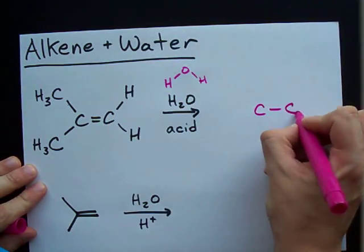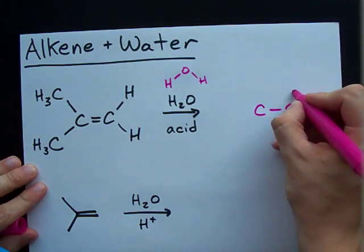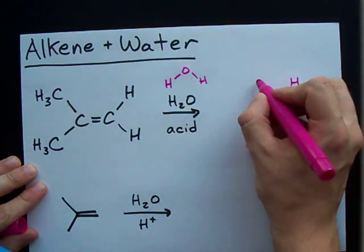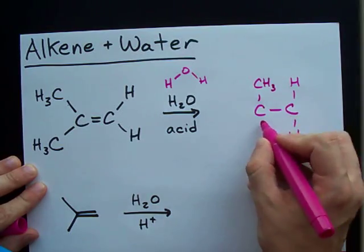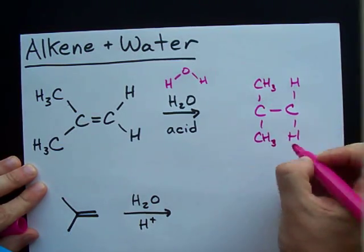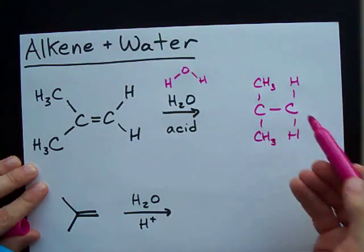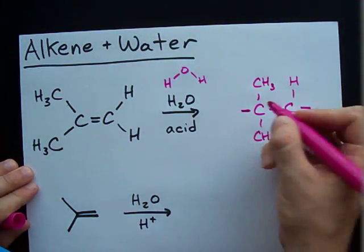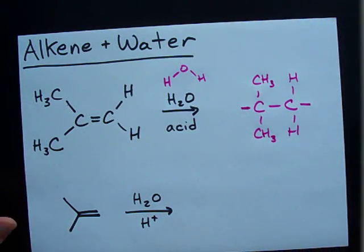We got our two carbons in the center connected to each other. The second one has two H's on it. The first one had a couple CH3's on it. Now notice I've rewritten the double bond as a single bond, because we've broken open the double bond. That means we can attach something to each carbon.